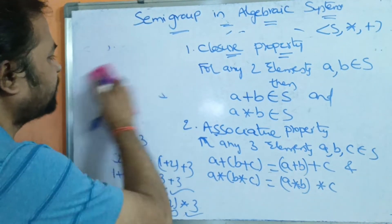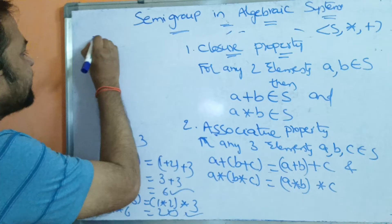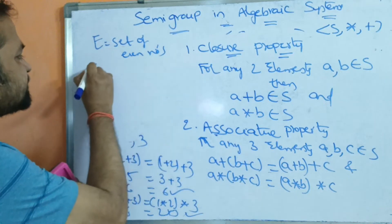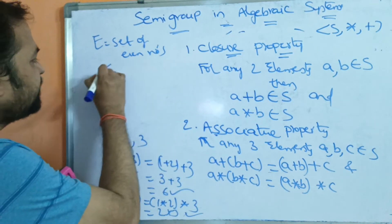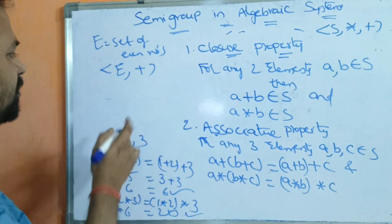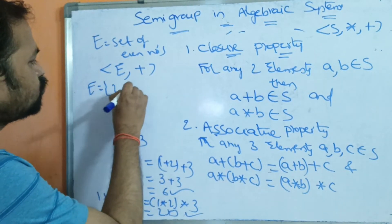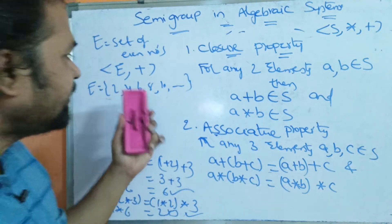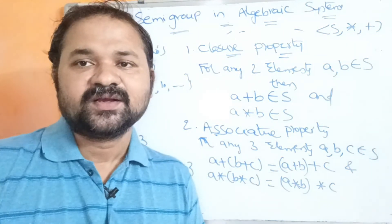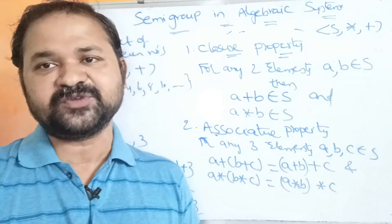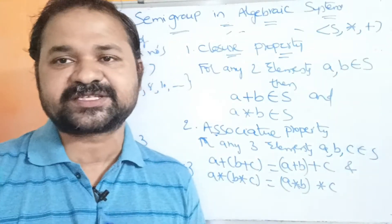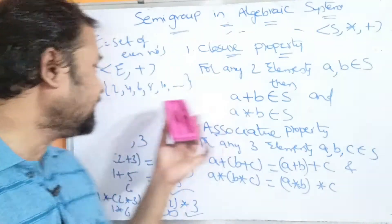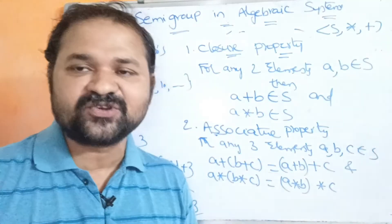Let us see some examples for the semi-group. Let E be the set of even numbers — 2, 4, 6, 8, 10, and so on. We have to check whether E, plus is a semi-group or not. We need to satisfy closure property as well as associative property. For closure property, take two elements: 2 and 4. 2 plus 4 equals 6, and 2 into 4 equals 8. Both 6 and 8 are present in the set, so closure property is satisfied.